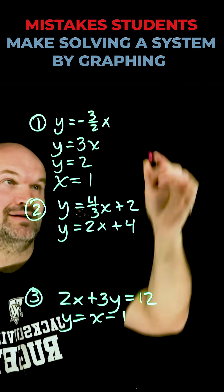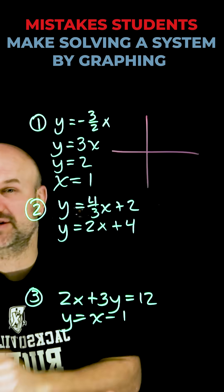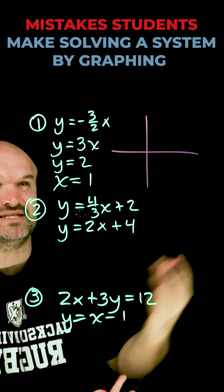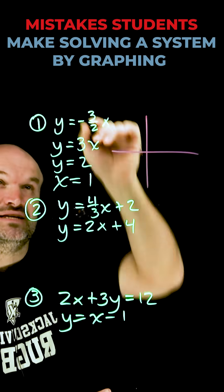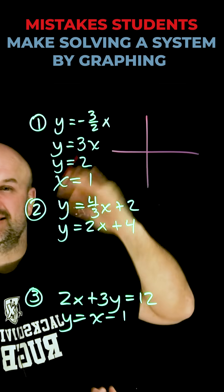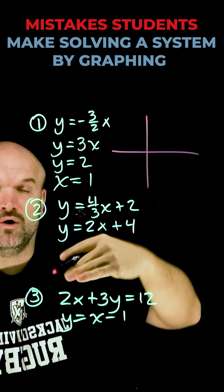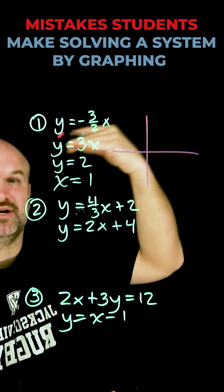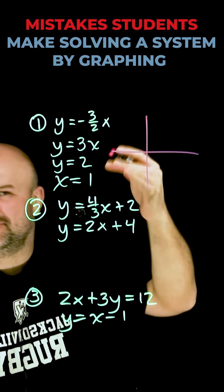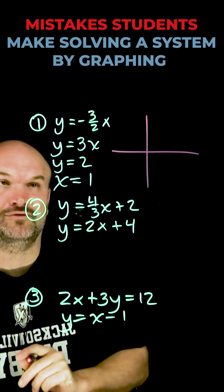The first mistake is graphing incorrectly. Students don't know how to graph these linear equations or they make common mistakes. When you have a negative slope, you can think about that as either a negative 3 over 2 or a positive 3 over a negative 2. Just don't do a negative 3 over a negative 2. Be very careful with that.